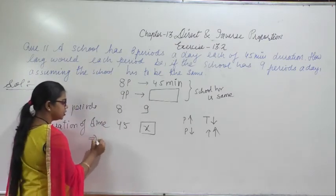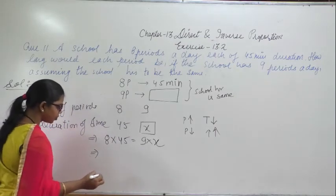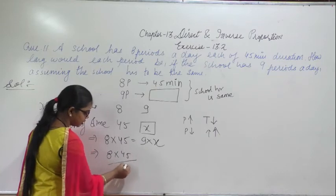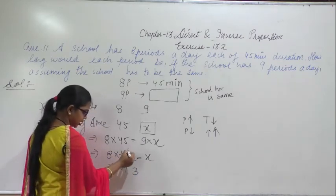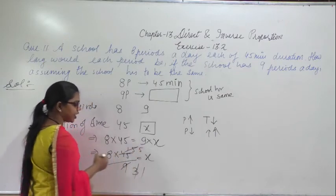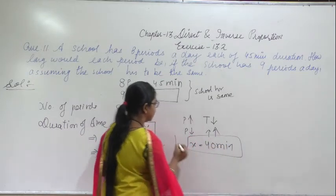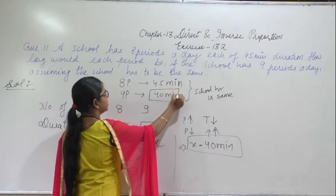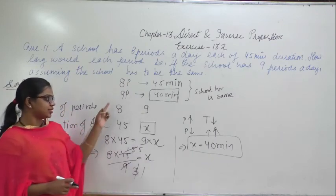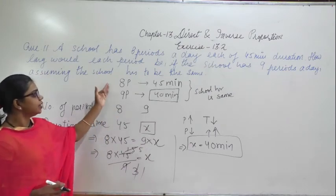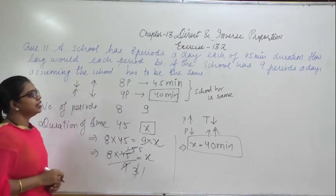So in inverse proportion we multiply: 8 into 45 equals 9 into x. So x equals 8 into 45 upon 9, which gives x equal to 40 minutes. So when the number of periods is 8, the time taken is 45 minutes, and if you increase the number of periods to 9, the time taken will be 40 minutes. Period is more, time period is less — this is the condition of inverse proportion.